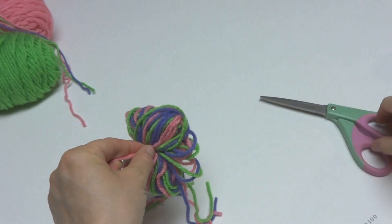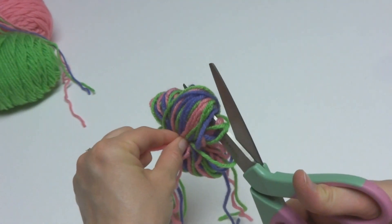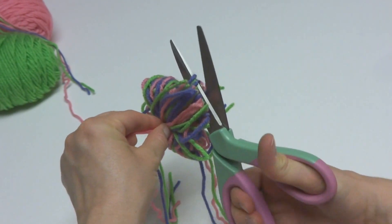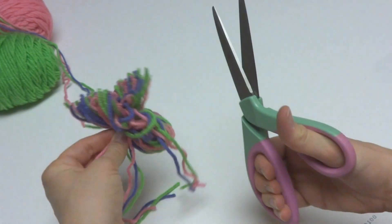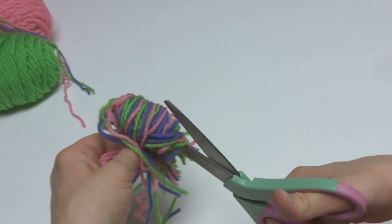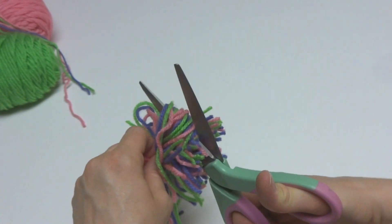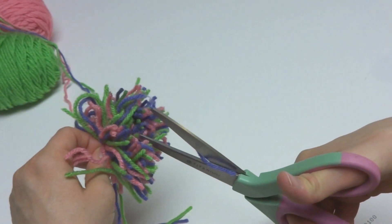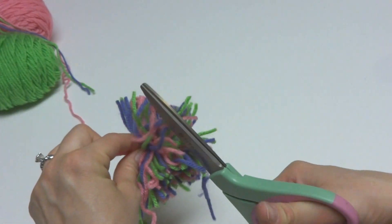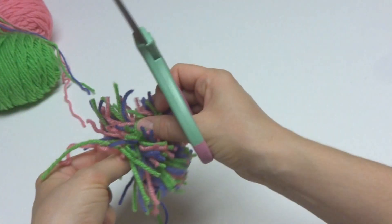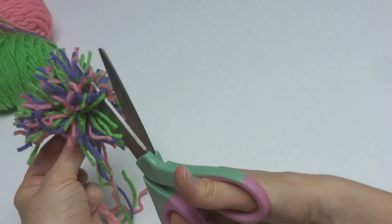So then what you're going to do is take your scissors and you're going to cut all of these loops. Just going to get your scissors in there and just cut all of these loops, just like that until there's no loops remaining. You might have to get your scissors in there and kind of find them and you're going to have pieces everywhere, but that's okay.